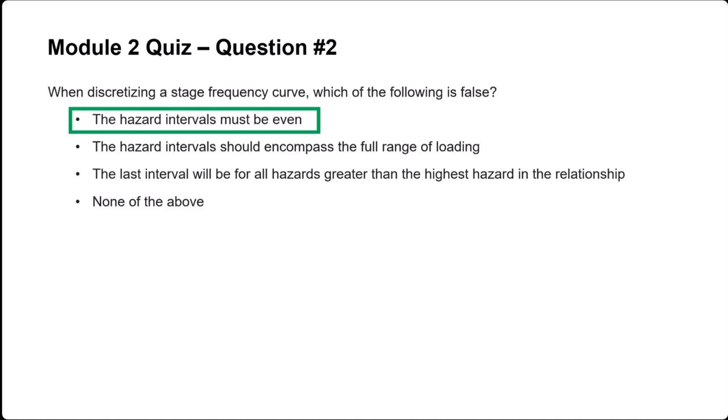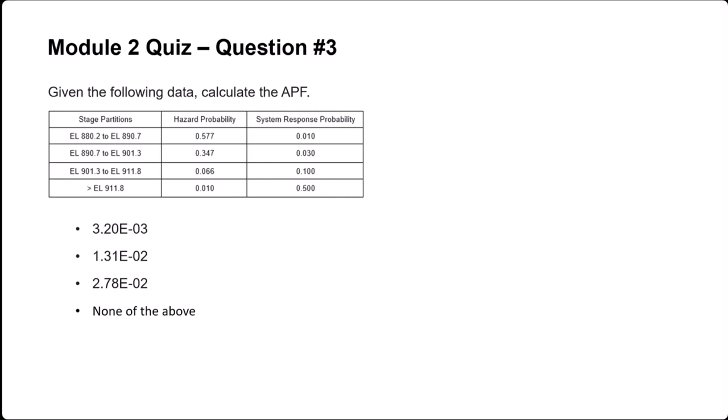Our hazard interval should always encompass the full range of loading, and then our last interval would be for the hazard greater than the highest hazard in the relationship. The correct answer for that one is that first one. For question three, we're given some data and asked to calculate the annual probability of failure. The APF is going to be 2.78 times 10 to the minus 2.